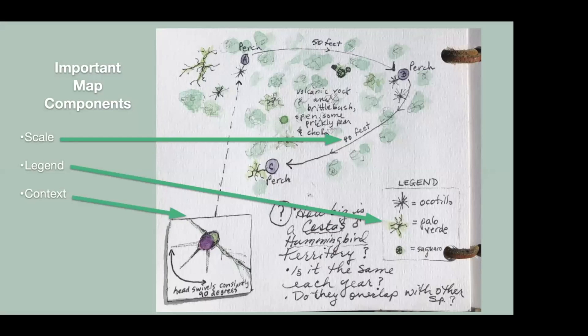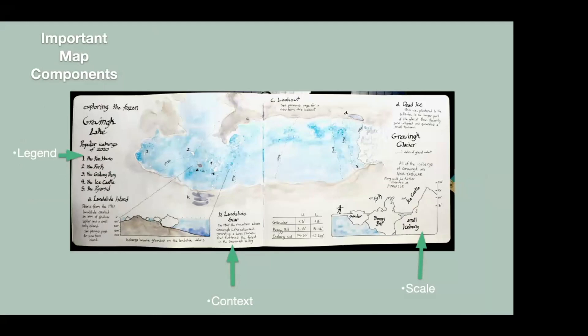Before we jump into drawing, let's make sure we go over some important components you want to try to put in most of your maps: scale, legend, and context. Try to put in scale — I did that in this map through measurement, so '40 feet' gives you an idea of the landscape. The legend is: what are those marks I made? Don't just make marks without writing what they are — you might forget. So: Ocotillo, Palo Verde, the saguaro, the top of the cactus, because I'm looking straight down. Then the context — write a bit about what it is doing, what you're mapping, like 'I was mapping what I think might be a Costa's hummingbird territory.'